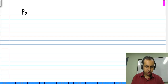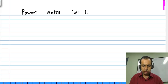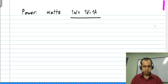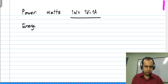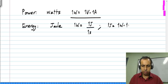The units of power are watts. For electrical power, 1 watt equals 1 volt times 1 ampere. The unit of energy is a joule, and 1 watt equals 1 joule per second, or 1 joule equals 1 watt times 1 second.